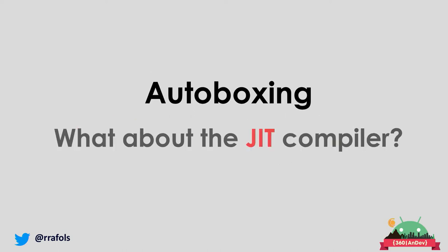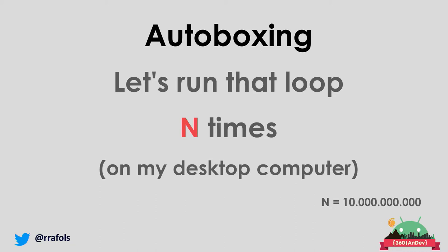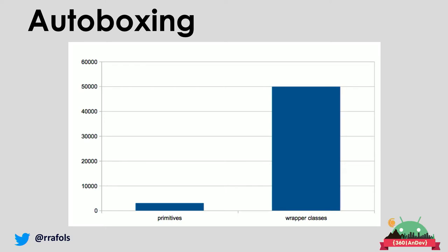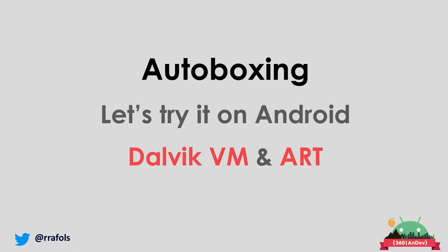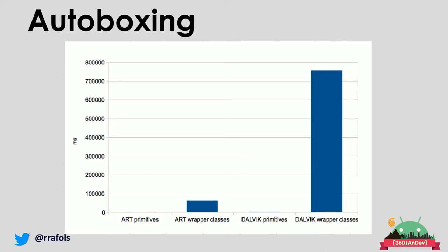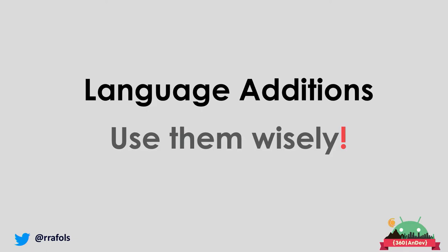The problem is not only performance but memory pollution — we're polluting the garbage collector with all the new objects being created inside the loop. Does Jack solve this? No, Jack doesn't go that far. Running both loops — primitives vs wrapper classes — you can see it takes more time on desktop with wrapper classes, due to memory or garbage collection. On Android, comparing Dalvik and ART: using primitives Dalvik is a bit slower than ART, but using wrapper classes there's a huge penalty on Dalvik. If you still support Dalvik devices, be very careful.